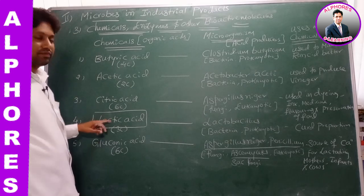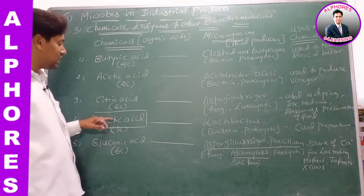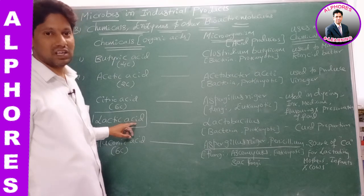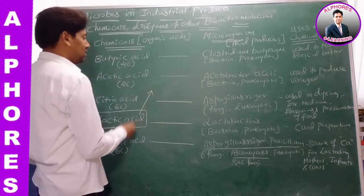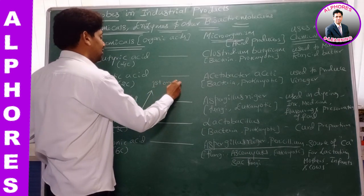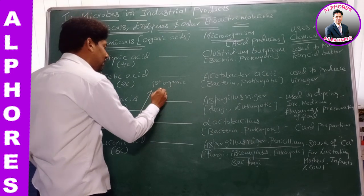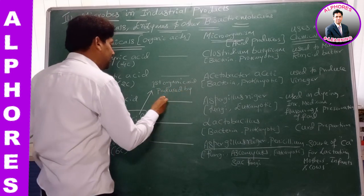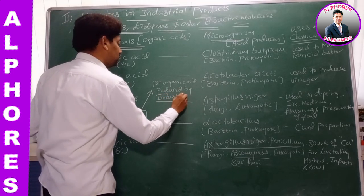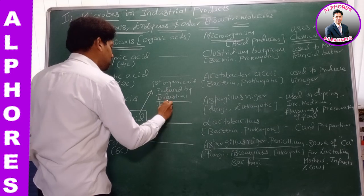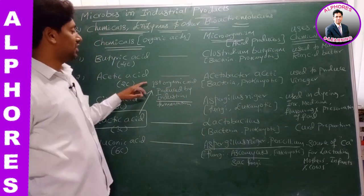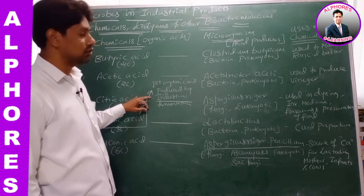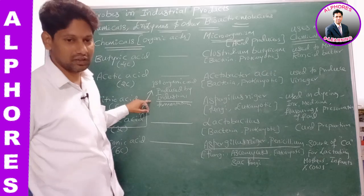This statement is important: lactic acid is the first organic acid produced by industrial fermentation. The first organic acid produced by industrial fermentation is lactic acid.